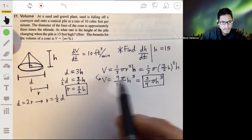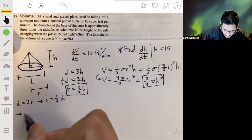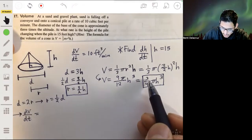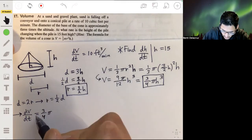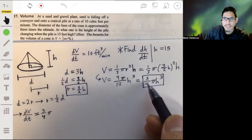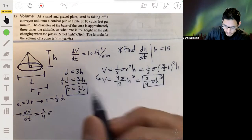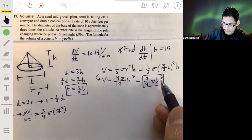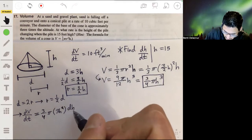So differentiating this whole thing with respect to time, let's start from this side. So dV/dt will be equal to three-fourths pi. It's not a variable, it's just a coefficient, it's just like a number. And then using the power rule to differentiate h cubed, you will get three h squared, and we're going to use the chain rule because h is a function of time as well, so we're going to multiply that by dh/dt.